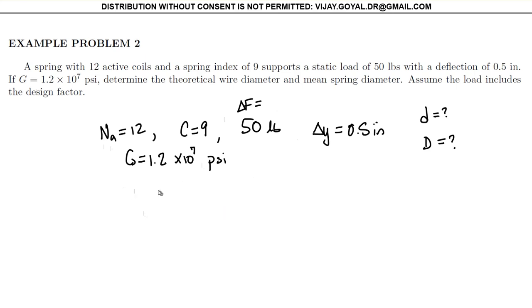So the first thing we know in the problem is that your delta deflection will be given 8 times the delta F C cubed N_A active number of coils over Gd.